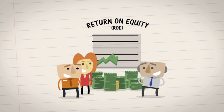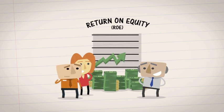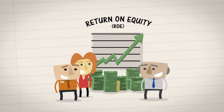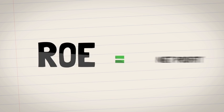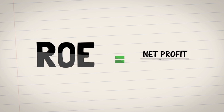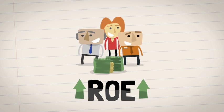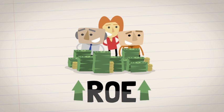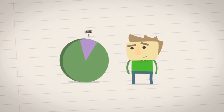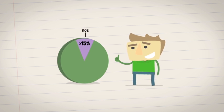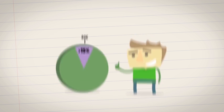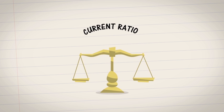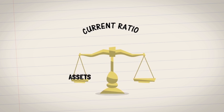The third ratio is return on equity, or ROE. This measures how much profit a company makes from shareholder equity. To calculate ROE, take the net profit and divide it by equity. The higher the number, the more money the company makes for its shareholders. Look for an ROE of 15% or higher.